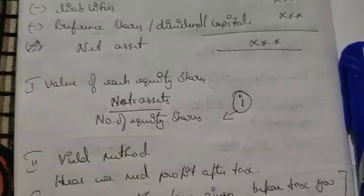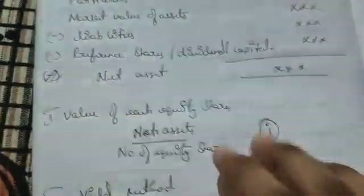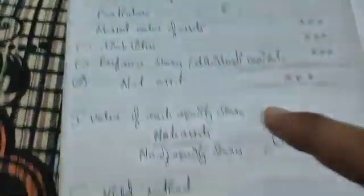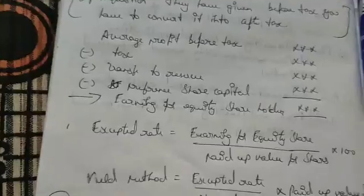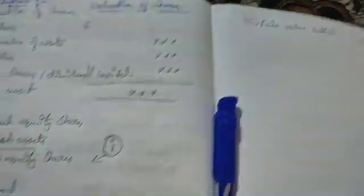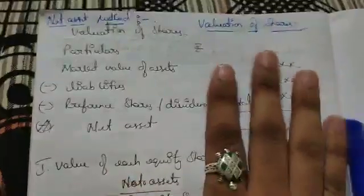See here carefully. First we have net asset method. For 14 marks, they can ask three methods: net asset method, yield method, and fair value method. I will teach you all three. For six marks, maybe one method can be asked.